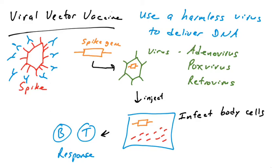Viral vector vaccines have their downsides. If you're injecting somebody with a virus, they could have a reaction to it, or they could already be immune to it. For example, if you're already immune to vaccinia virus due to a smallpox vaccine, using a poxvirus to carry a gene into your cells might not work efficiently because your immune system might repel it. Similarly, with retroviruses, there is some danger of affecting your own genomic DNA with these viral DNA pieces. There are definite limitations to viral vector vaccines.